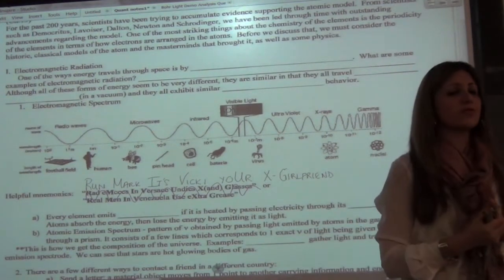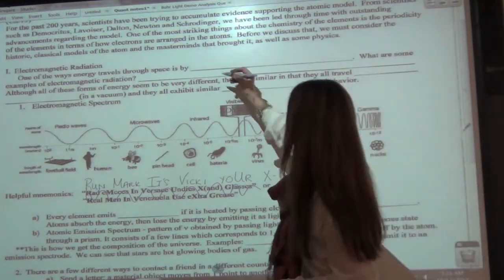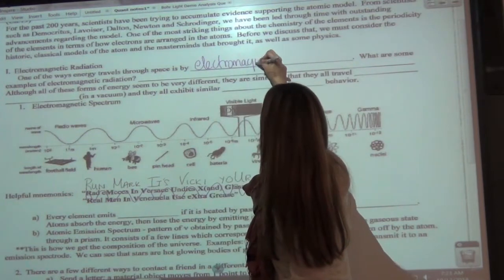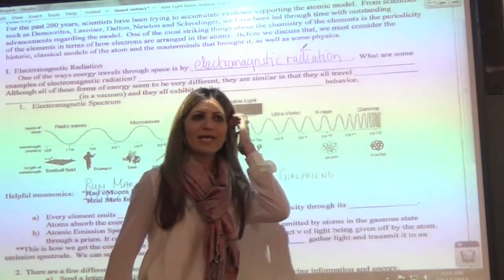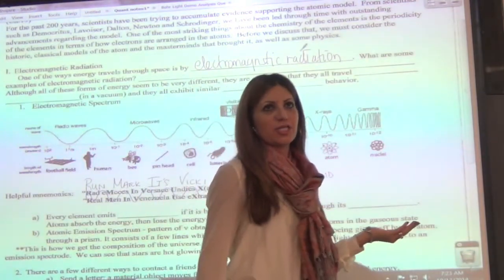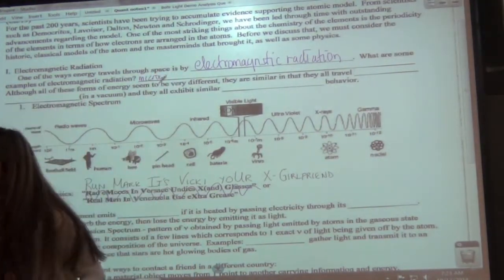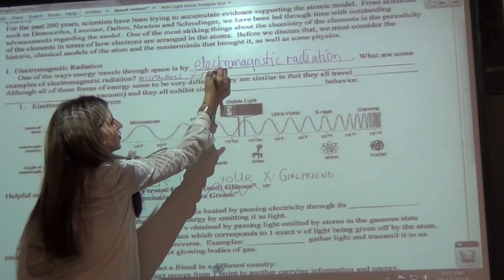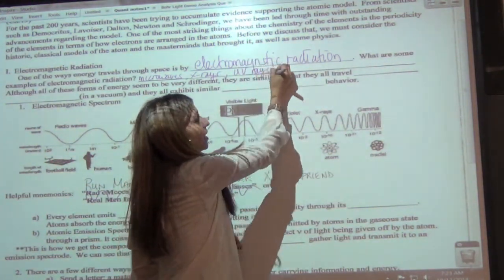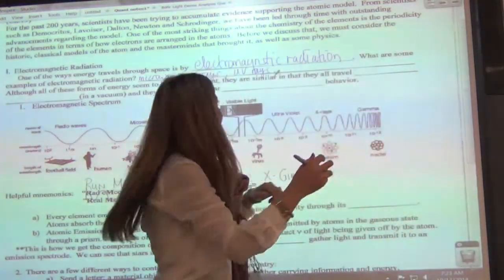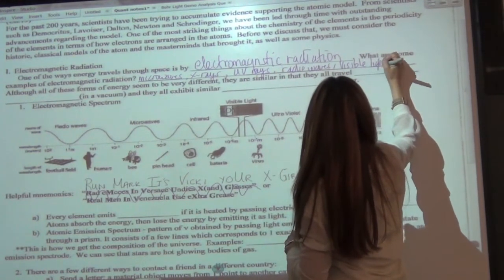Before we discuss that, let's consider the historic classical models of the atom. One of the ways energy travels through space is by something called electromagnetic radiation. What are some examples of electromagnetic radiation? Students call out: microwaves, X-rays, ultraviolet rays, radio waves, and visible light.